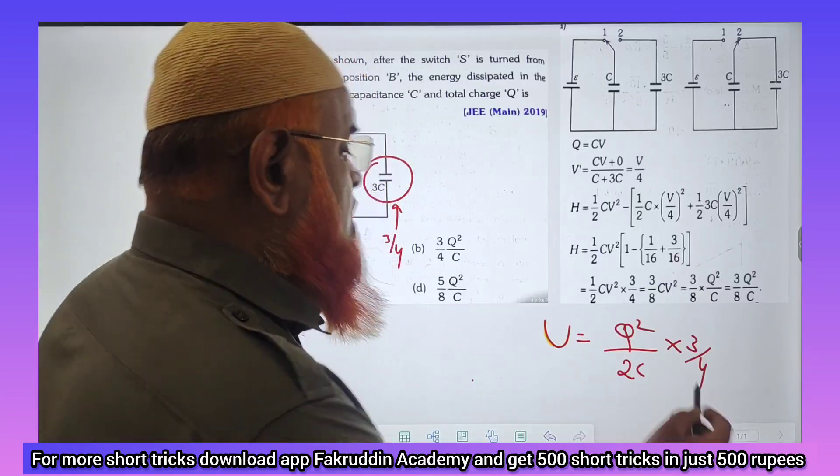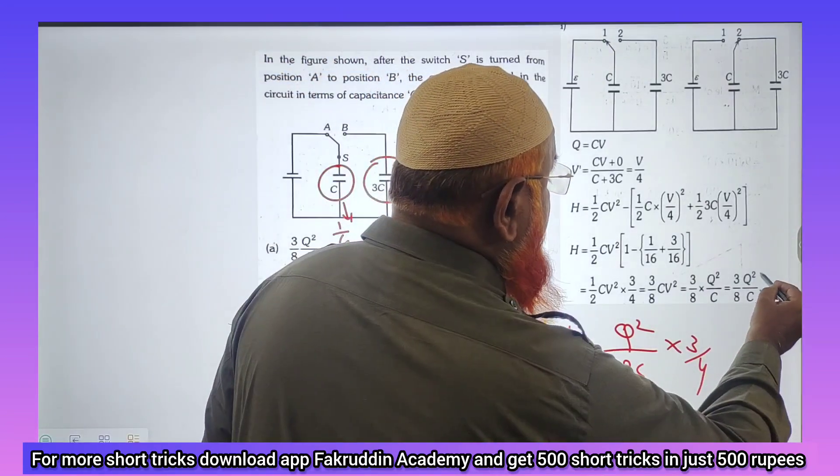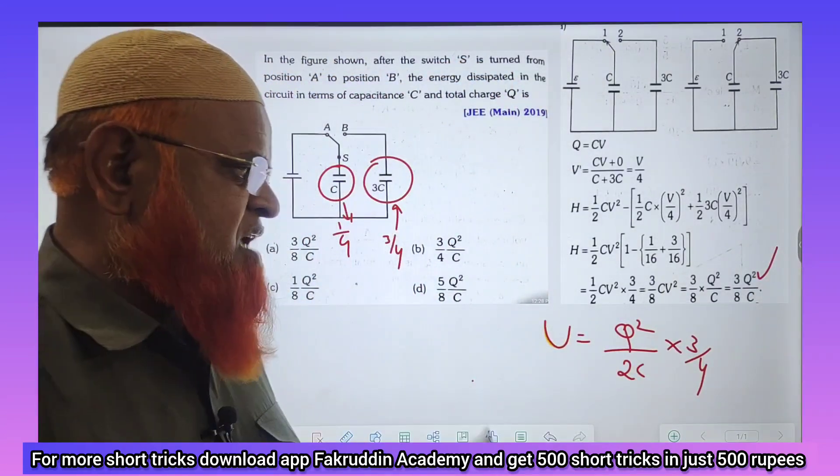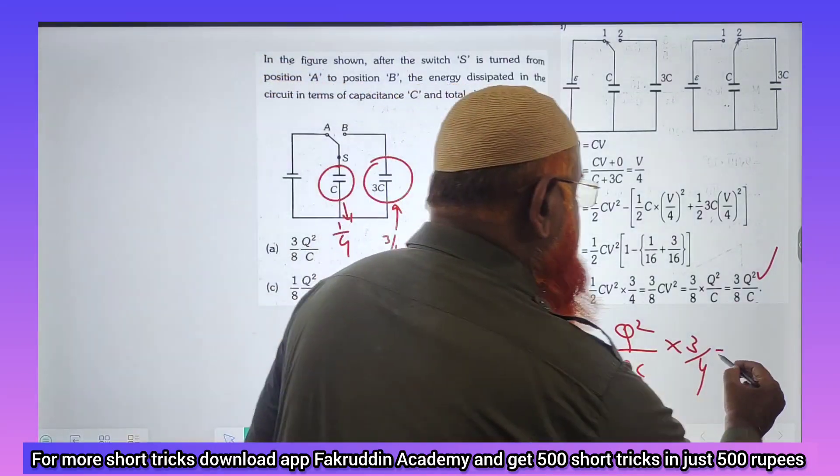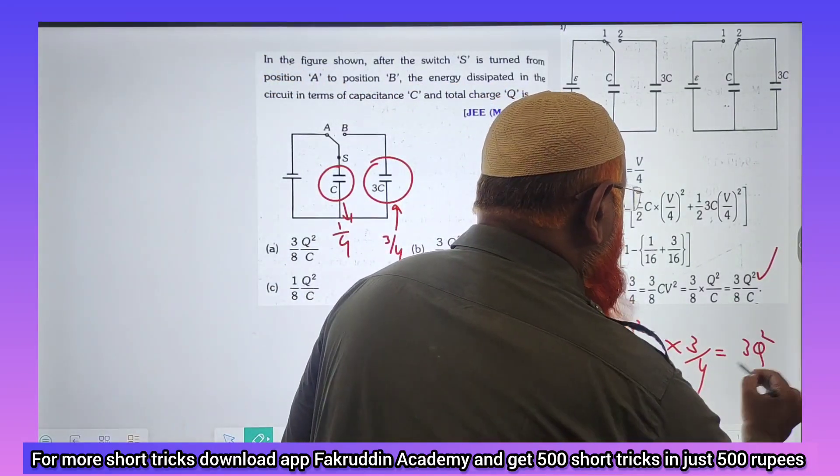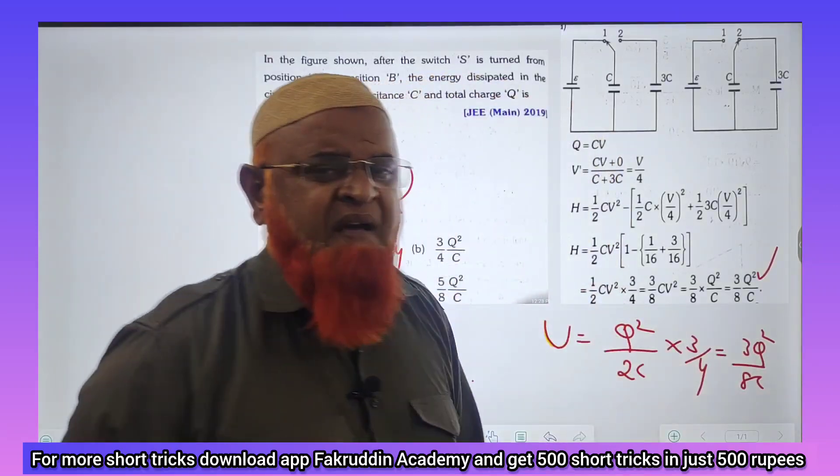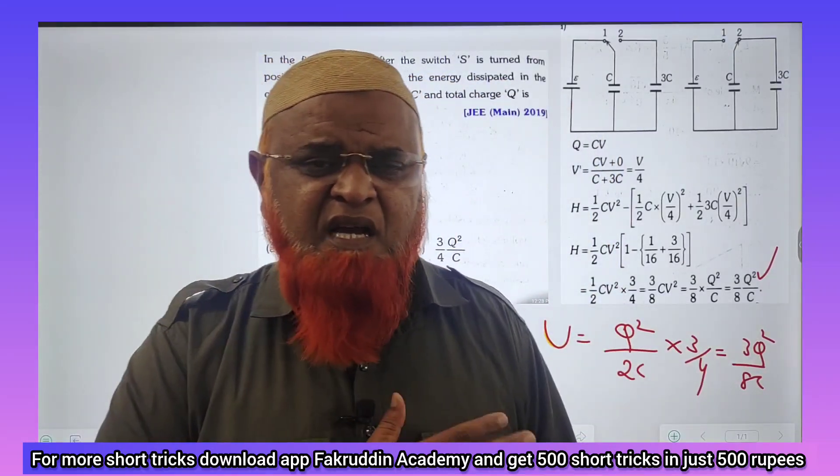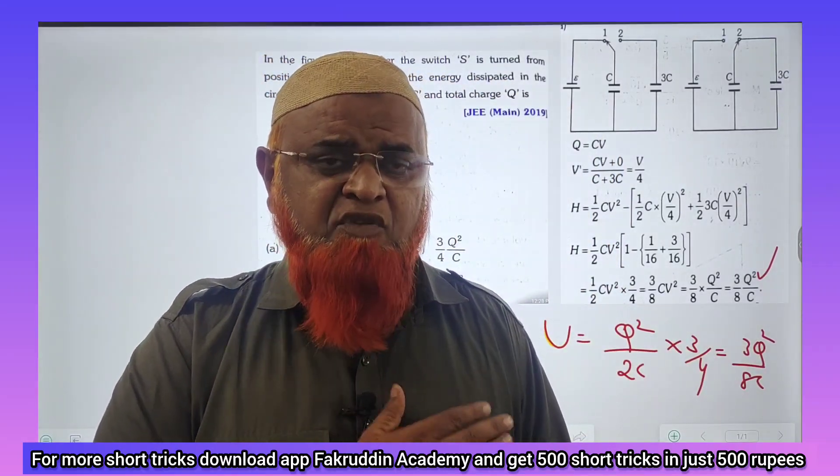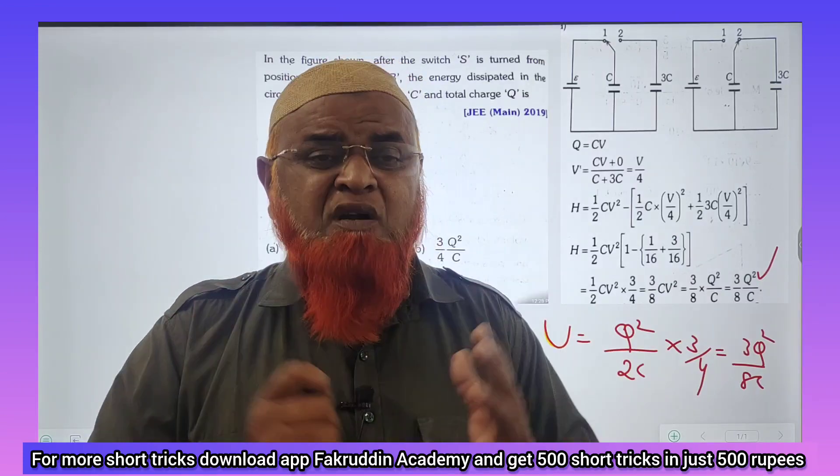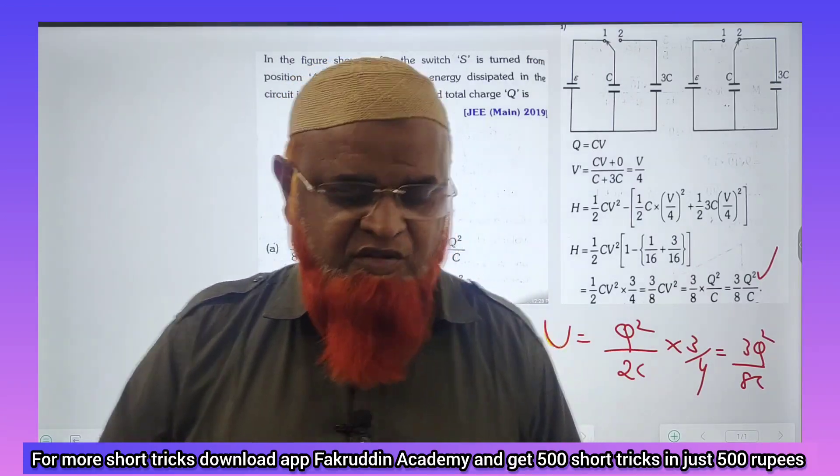So what is your answer? 3 by 8 times of Q square by 2C. Answer is ready: 3Q square by 8C. This is the answer which has been discovered by me. Alhamdulillah, I hope this shortcut will help you a lot. Thank you very much.